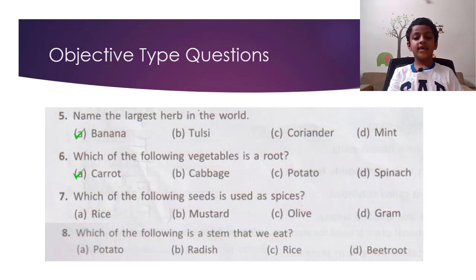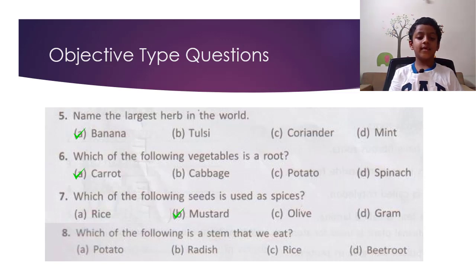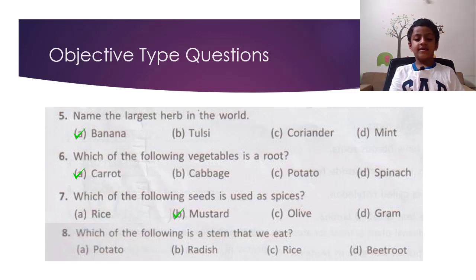Question 6: Which of the following vegetables is a root? The answer is carrot. Question 7: Which of the following seeds is used as spices? The answer is mustard. Question 8: Which of the following is a stem that we eat? The answer is potato.